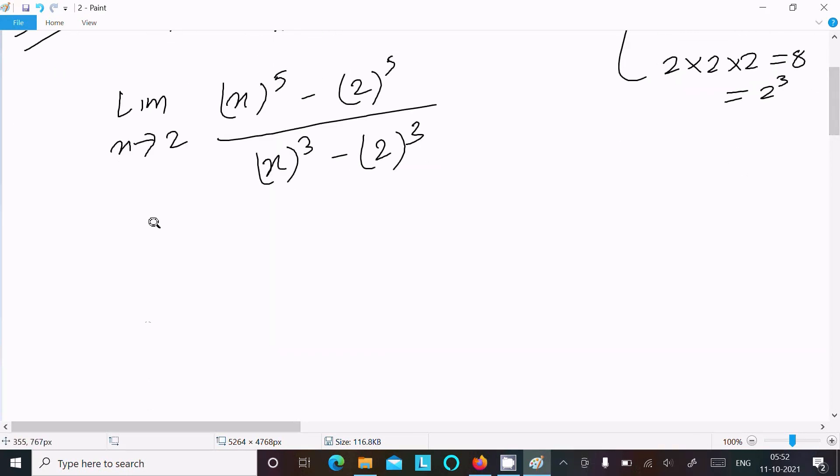Now thereafter we have the formula: limit x tends to a of (x^n - a^n) divided by (x - a), that is equal to n·a^(n-1). So limit x tends to a, x^n minus a^n, divided by x minus a, that is equal to n·a^(n-1).